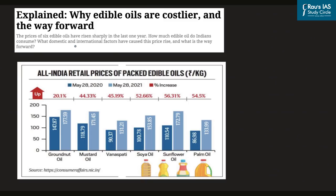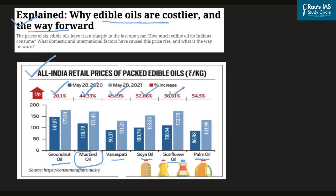The next article from the Indian Express explained section is 'Why edible oils are costlier and what is the way forward.' This news has come up in the context of the sharp rise in prices of six edible oils in India. As compared to last year, groundnut oil has increased by about 20%, mustard oil by 44%, Vanaspati, soya, sunflower oil and palm oil have risen by 45%, 52%, 56% and 54% respectively, as highlighted by the Consumer Affairs Ministry.